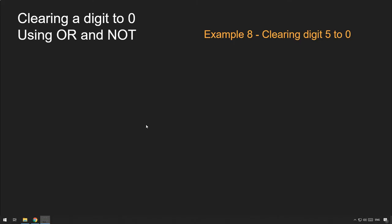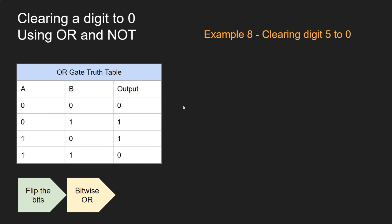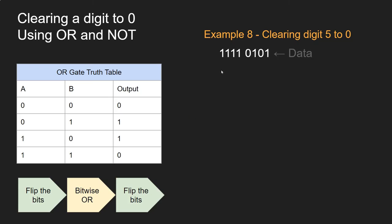The only thing we haven't covered is how to clear a digit — how to set one or multiple digits to 0. We can't do it the same way as we used OR to set them to 1, because OR wouldn't work like that. We need to be a little more clever, and this is the only one where you use multiple gates. It's a three-part process: first, use the NOT gate to flip the bits; then perform a bitwise OR just like before; then finally flip the bits back using NOT again.